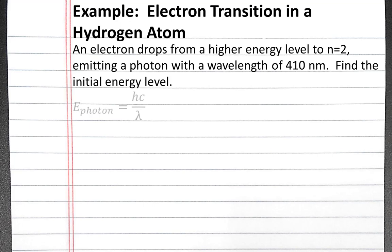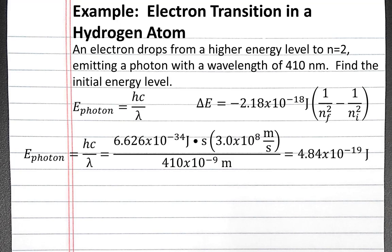First, we'll want to calculate the energy of the photon that's emitted when the electron drops from a higher energy level to a lower energy level. And we can use that energy in the equation shown on the right to calculate the initial energy level. So the energy of our photon is equal to Planck's constant times the speed of light divided by the wavelength.